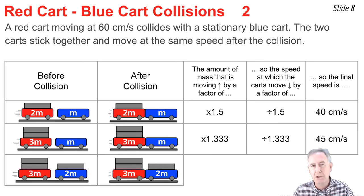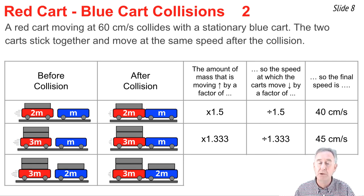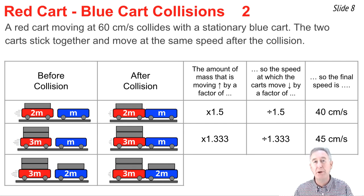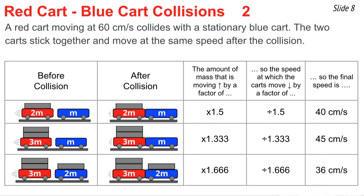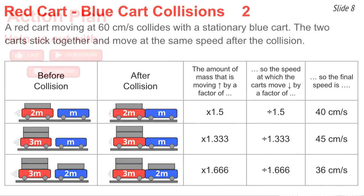In the last row, 3m hits 2m, so after the collision the mass moving is 3m plus 2m, which is 5m. The multiplying factor on mass is 5 divided by 3, or 1.6667 repeating. To find the final speed, I divide 60 by 1.6667 repeating and get 36 cm/s.